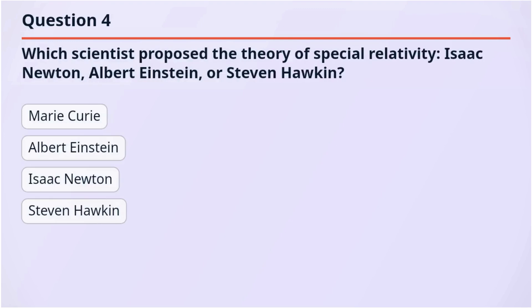Question 4. Which scientist proposed the theory of special relativity — Isaac Newton, Albert Einstein, or Stephen Hawking?